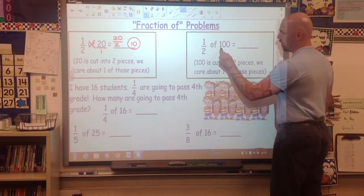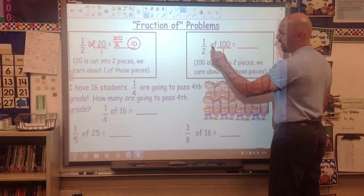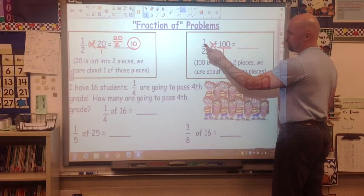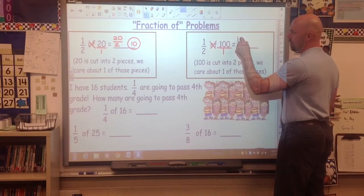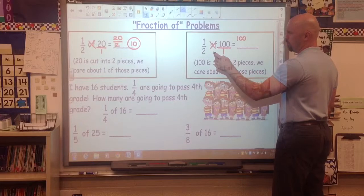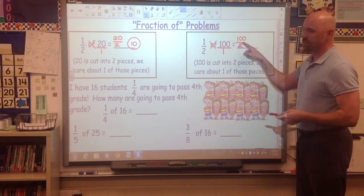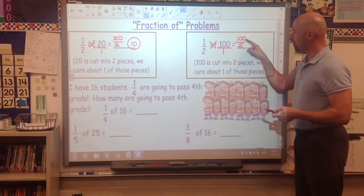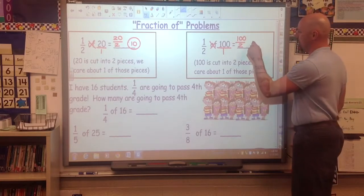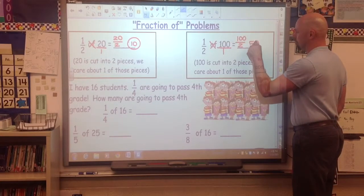Let's try it on this one. We see of means to multiply. 1 times 100 is 100. 2 times 1 is 2. And that's a division problem again. 100 divided by 2.